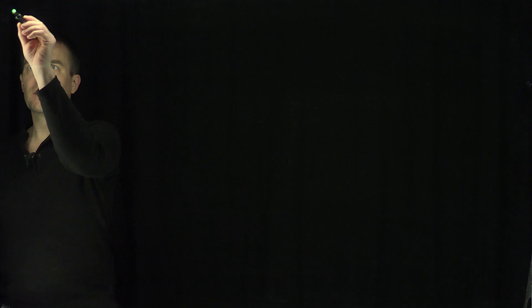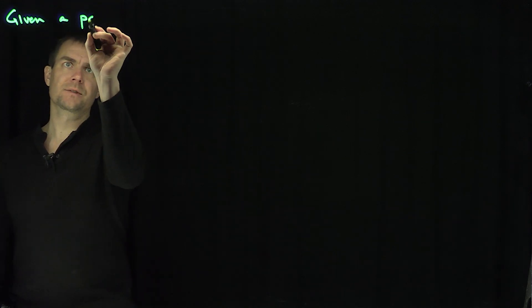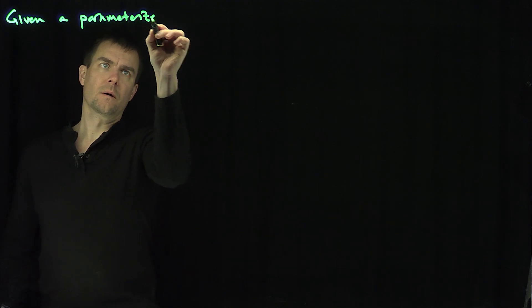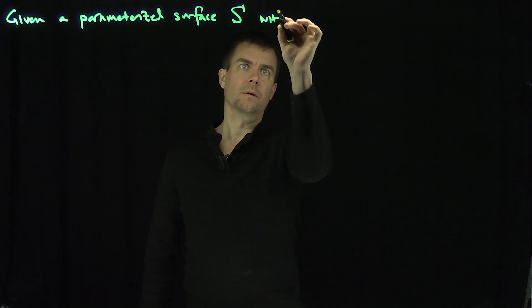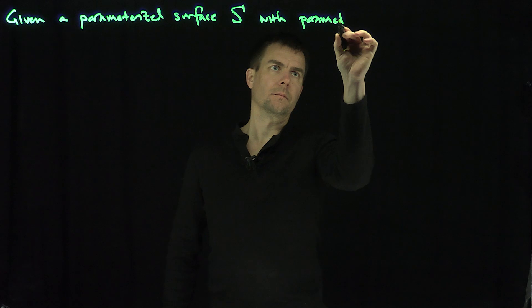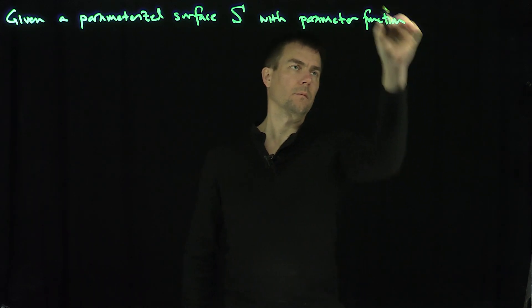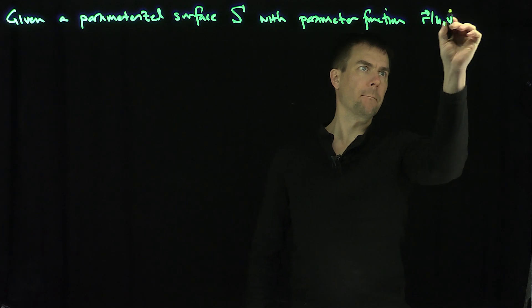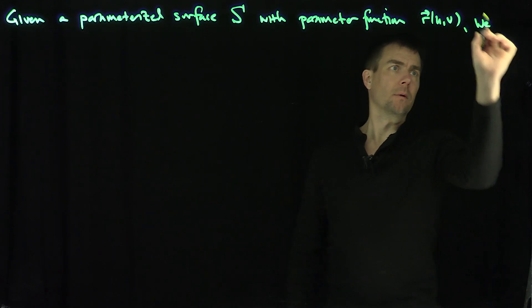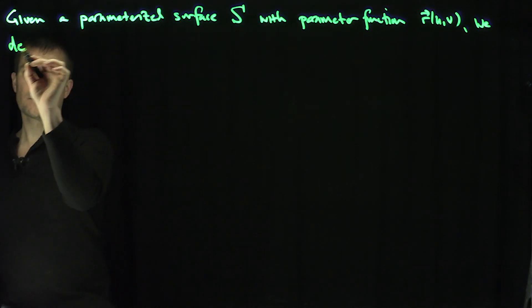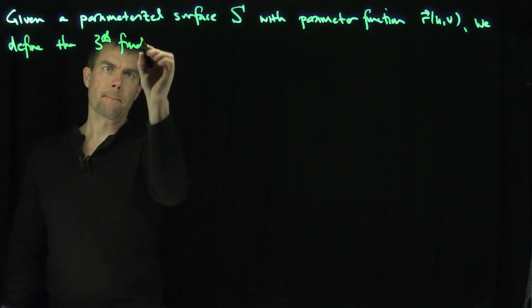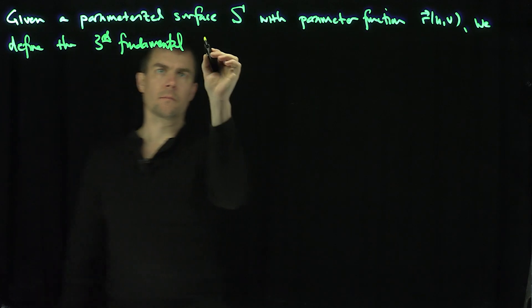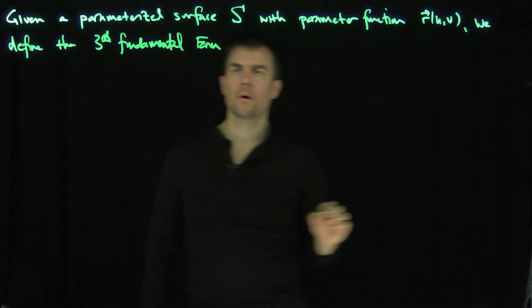Hello, students. In this video, we'll consider the third fundamental form of the surface. Given a parameterized surface S with parameter function R of U and V, we define the third fundamental form like so.